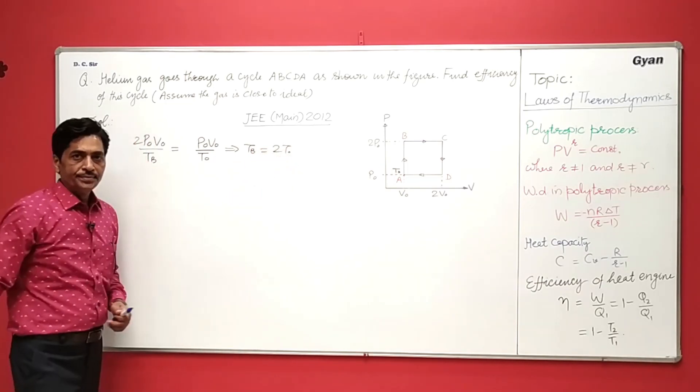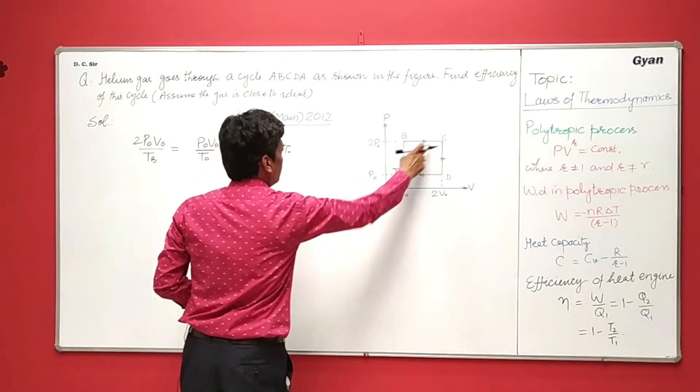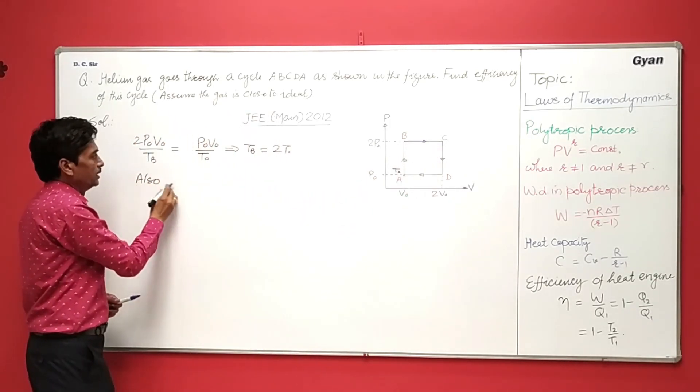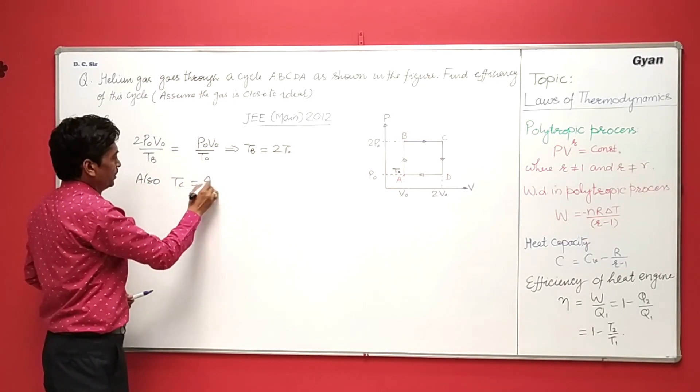Now similarly we can get the temperature at point C. So temperature at point C is equal to 4T0.